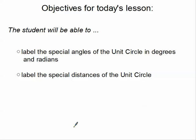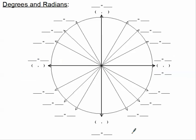Now we will learn this first objective: how to label the special angles of the unit circle in degrees and in radians. Here is a diagram of our unit circle, and there are 17 special angles of our unit circle.